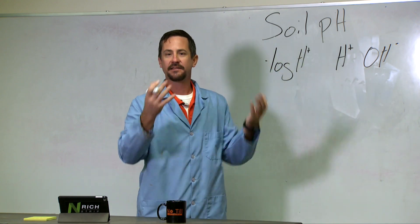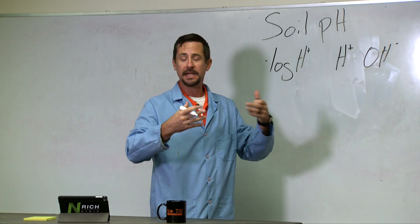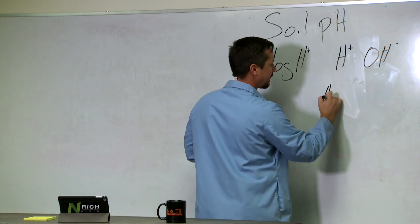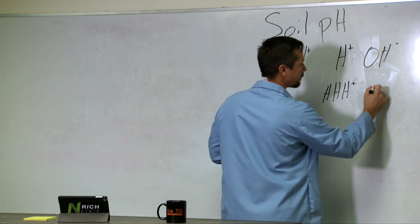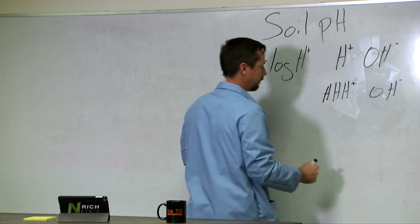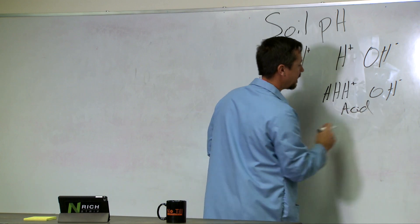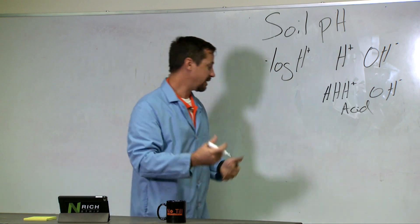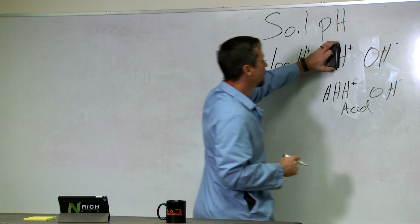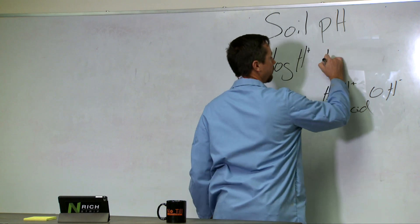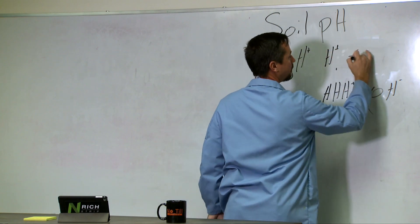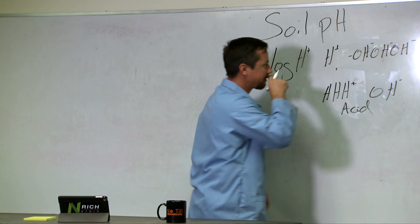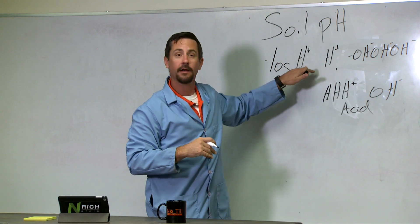As we go into an acidic soil, or as the pH decreases, we have an increase in hydrogen — we actually have more hydrogens in an acidic soil than we have hydroxyls. If we want to talk about a basic or high pH soil, in that soil system we have an abundance of hydroxyls — more hydroxides than hydrogen.